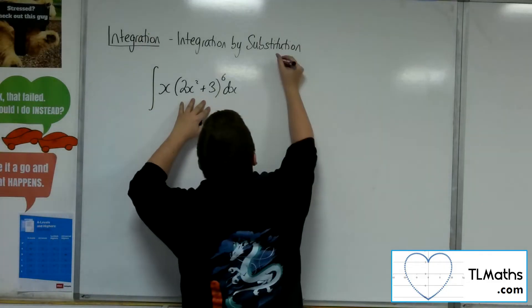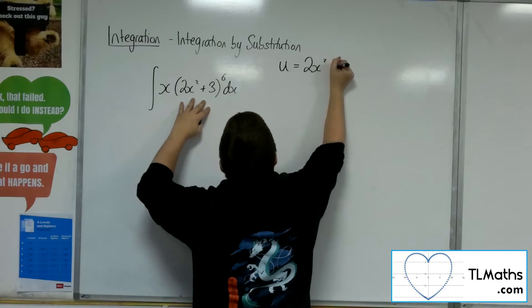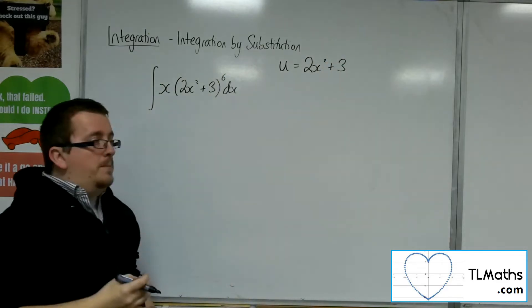So that is the u, so the 2x squared plus 3 is the substitution to make.